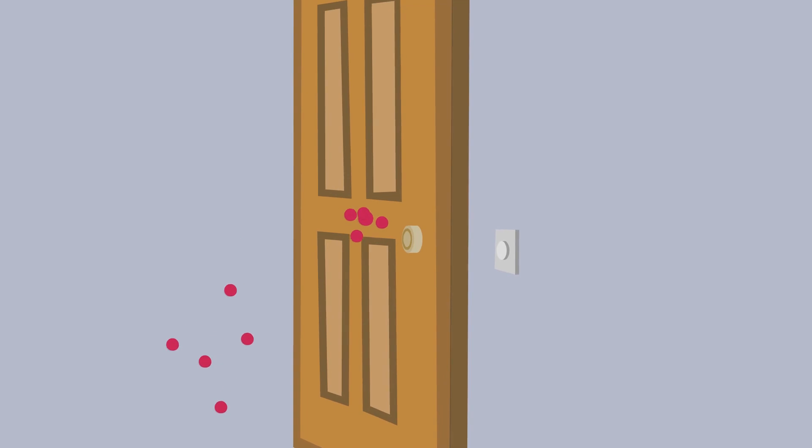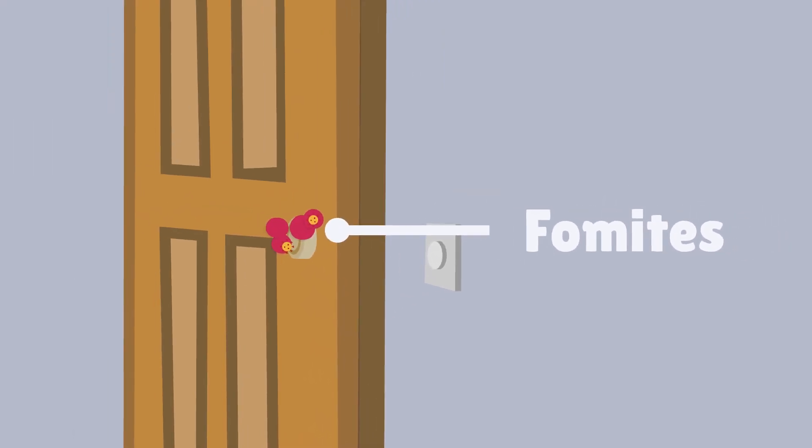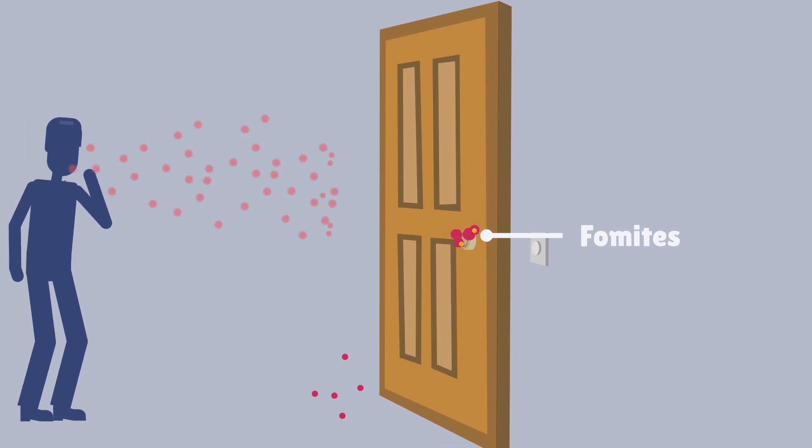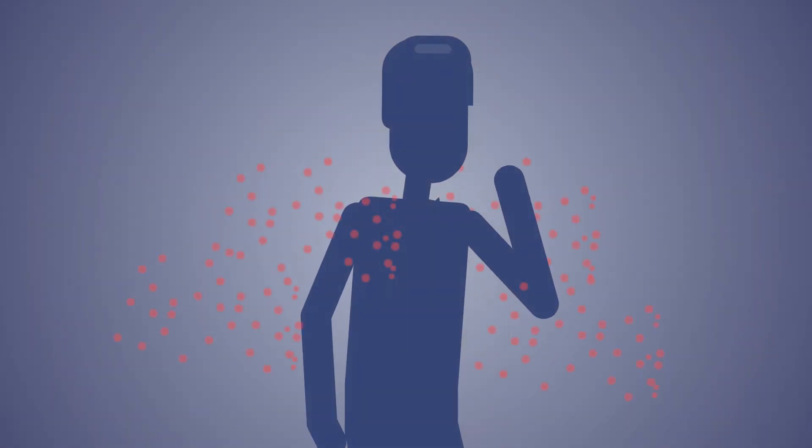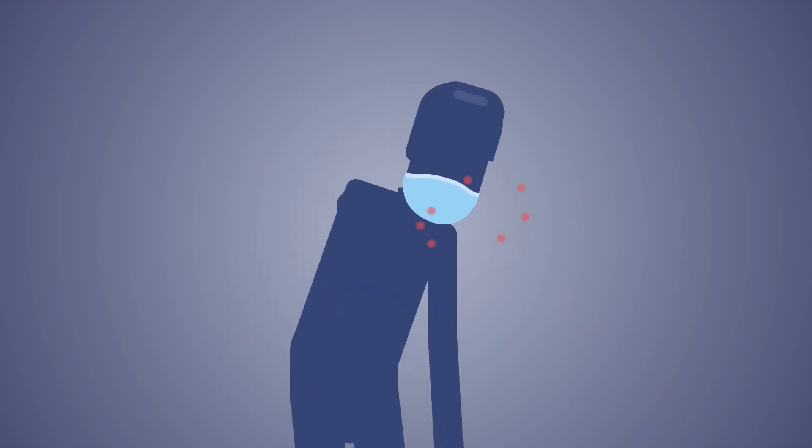They can also land on surfaces and these are known as fomites. So basically anyone and any surface could be a source of transmission, and the best way to reduce this transmission is masks that minimize not so much the inhalation of those particles, but the exhalation.